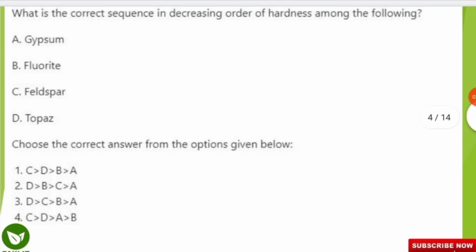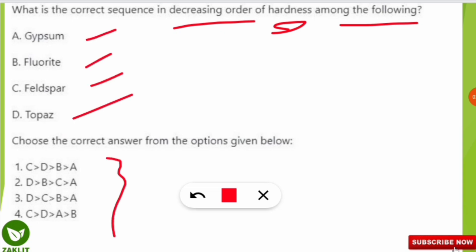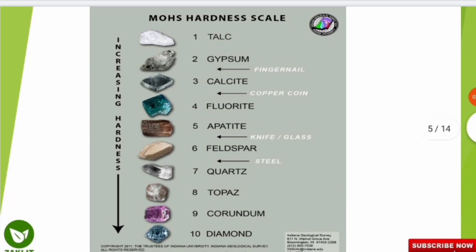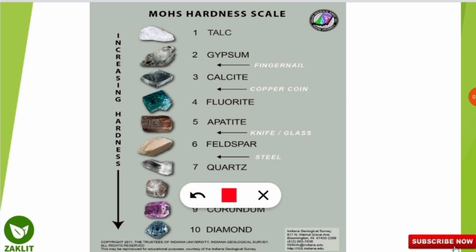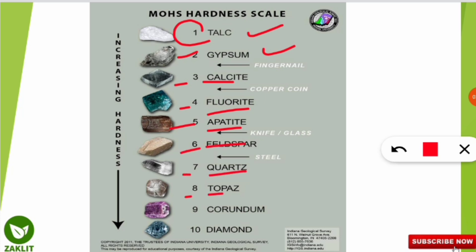The next question asks for the correct decreasing order of hardness among gypsum, fluorite, feldspar, and topaz. The concept here is the Mohs scale of hardness, which defines hardness from 1 to 10. Talc is the softest at 1, followed by gypsum at 2, calcite at 3, fluorite at 4, apatite at 5, feldspar at 6, quartz at 7. In between gypsum and calcite — at the 2 to 3 range — fingernail hardness falls.